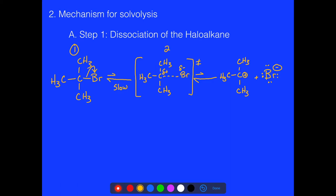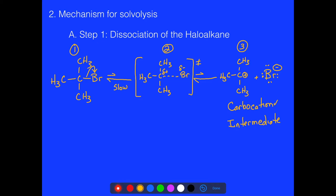Let me add in some numbers here. We call this our number 2 species — the transition state — and this third one, which we call the carbocation, is our intermediate. So we can label it two ways: specifically it's a carbocation — a carbon with a positive charge — and more generally, it's an intermediate.